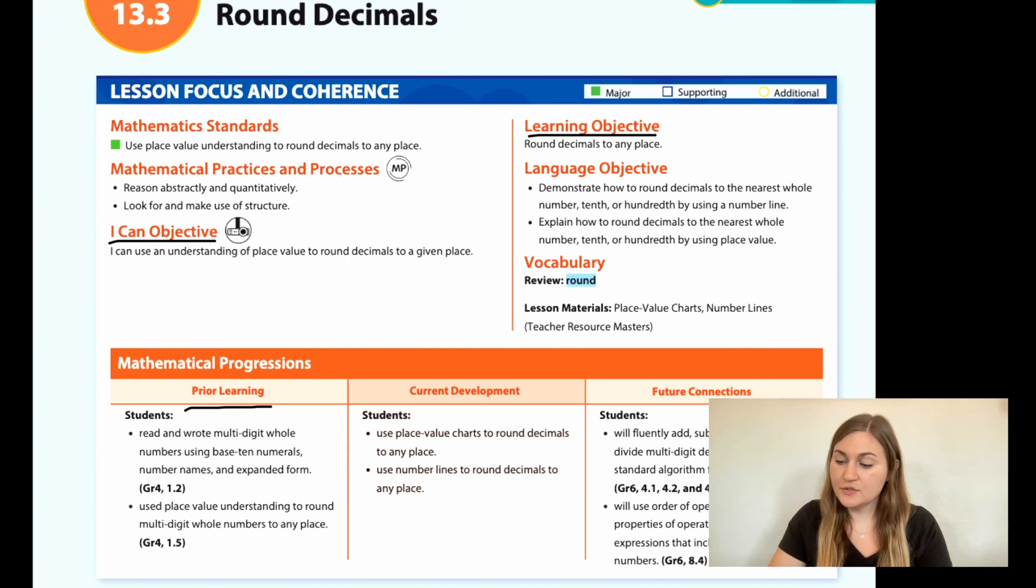Prior learning is that students read and wrote multi-digit whole numbers using base-10 numerals, number names, and expanded form. Students used place value understanding to round multi-digit whole numbers to any place.